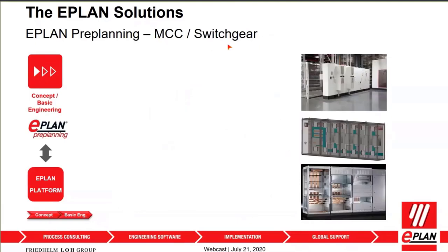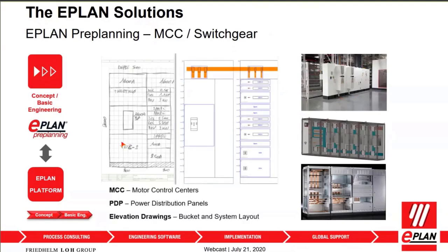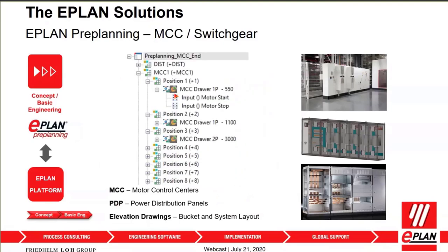If you're in the MCC or switchgear business and need to lay out switchgear cabinets and buckets, instead of just graphically capturing it in Visio or CAD, you can capture it both graphically and logically — meaning behind each bucket you have the control system needed, identifying protection devices and whether a transformer is needed. All equipment per bucket can be captured during the elevation drawing layout, easily creating elevation drawings in ePlan with the control system, positions, bucket sizes, and equipment details.